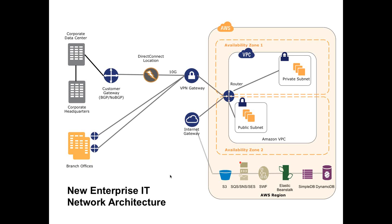We have a lot of customers that use the Direct Connect service. Direct Connect allows you to provide a private connection to us through our partners, such as Equinix. This private connection is available in 1 gigabyte and 10 gigabyte segments. It allows you to avoid routing anything across the public Internet, and you'll get a very consistent experience when connecting into your VPC environment and the AWS services. That's an optional service, but many of our customers do leverage it within VPC.